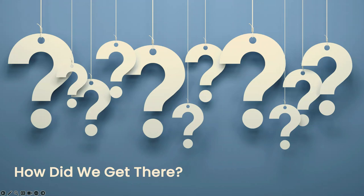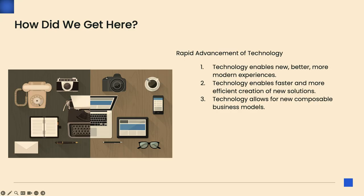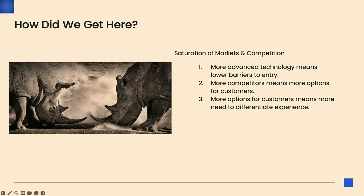So how did we get here? The rapid advancement of technology is the number one driver of this change. In a 24-year time span, it was 10 years from static content to social and dynamic content — then less time from social to API-driven interactive experiences. Today we have AI speeding up the rate of technological change, and it's going to continue to drive new solutions even faster than before.